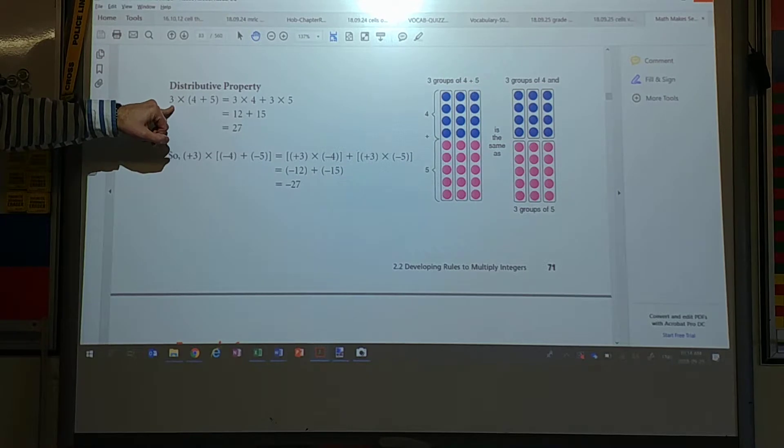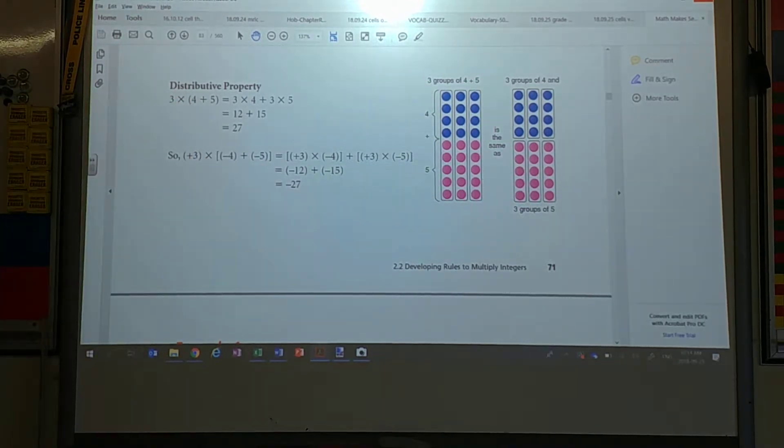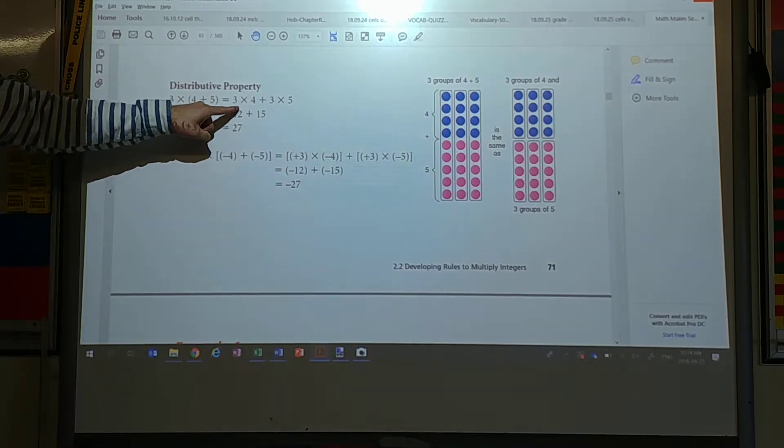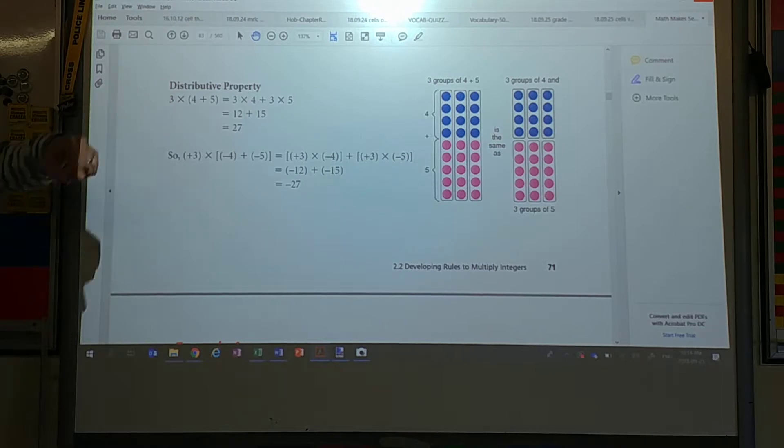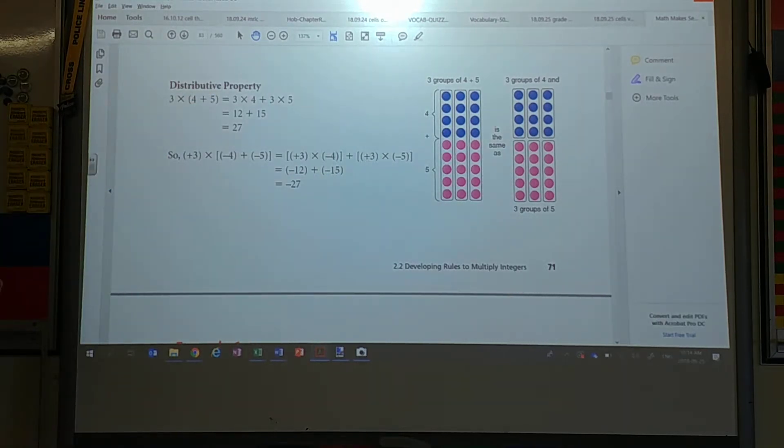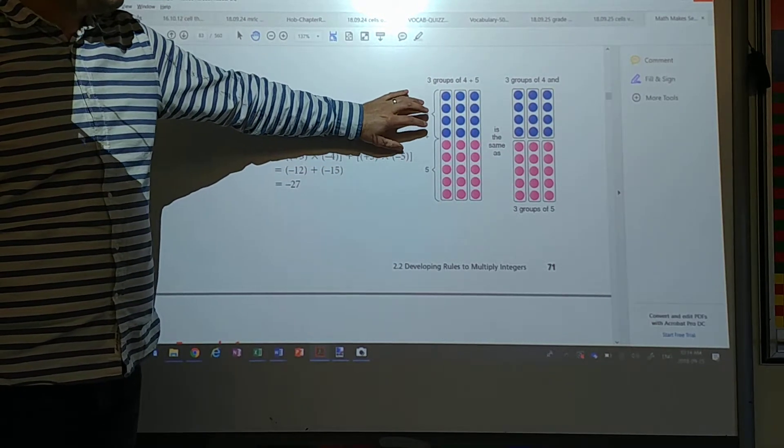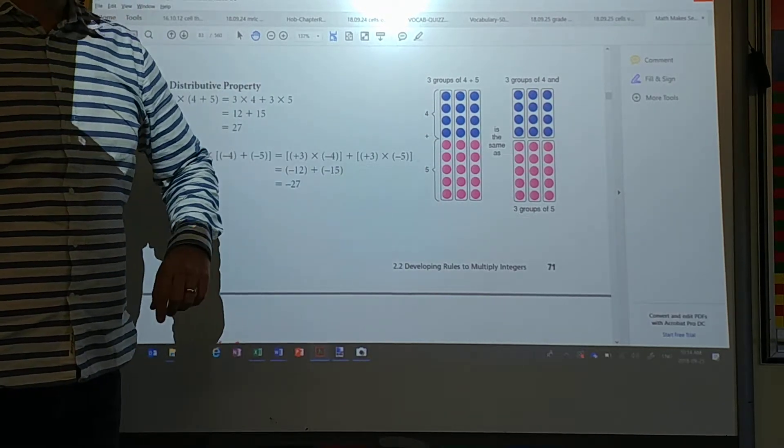Take a look at this one. Three times four plus five. So this person chooses to rewrite it. Three times four. Three times four. Plus three times five. Do you remember when you were a little kid and you were drawing those little lines for it? And you draw the lines three times four and three times five? We're just doing that same thing again.